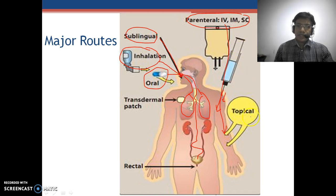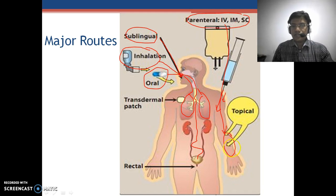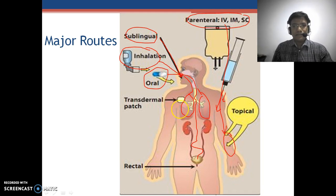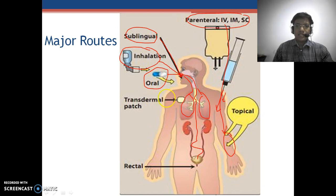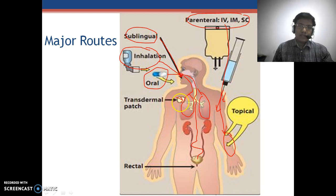Here we can see the topical route, in which the drug is applied on the surface of the skin in the form of cream, lotion, or gel. The transdermal route is one in which the drug is administered systemically across the skin, deep into the blood circulation. There is also the rectal route, in which the drug is administered through the rectum.